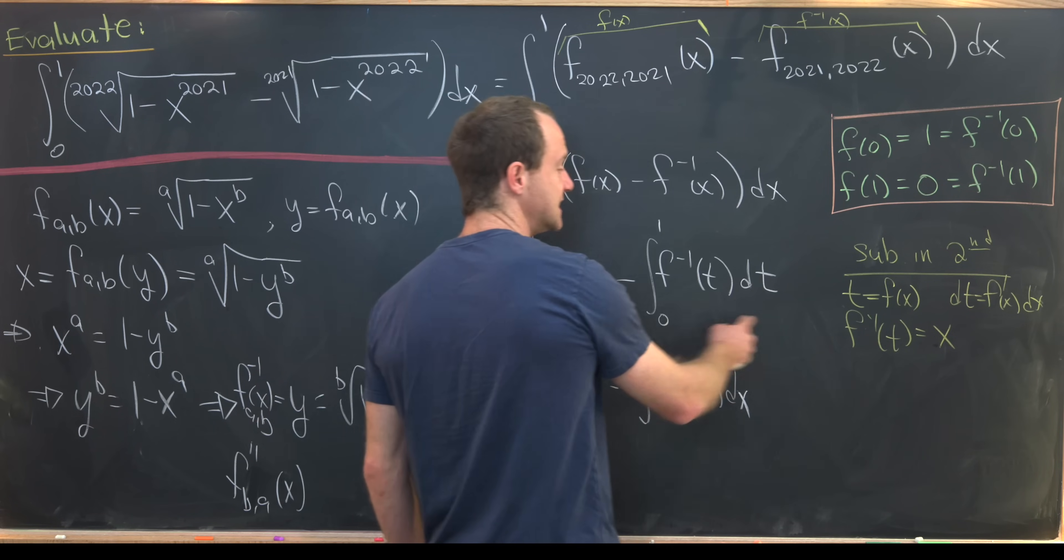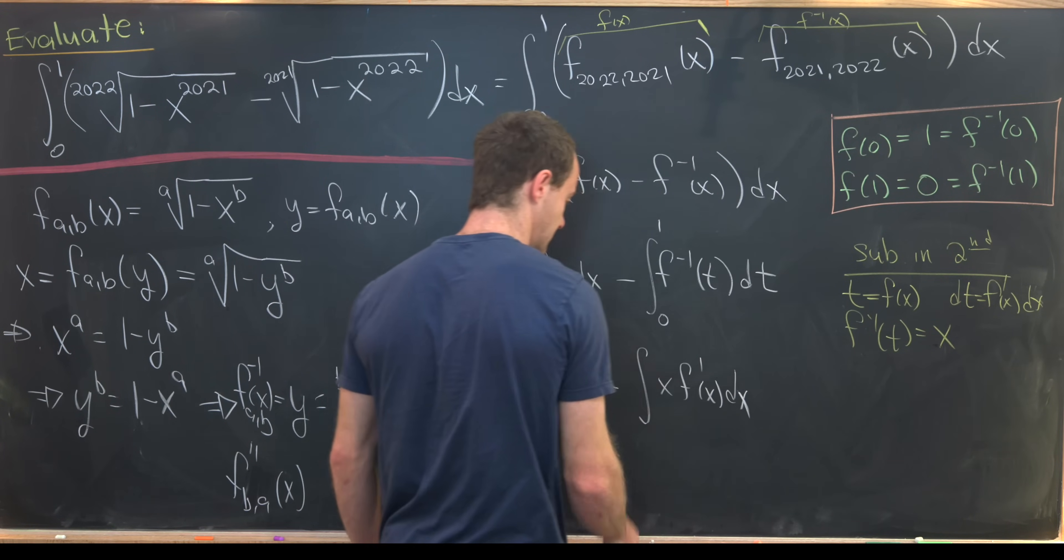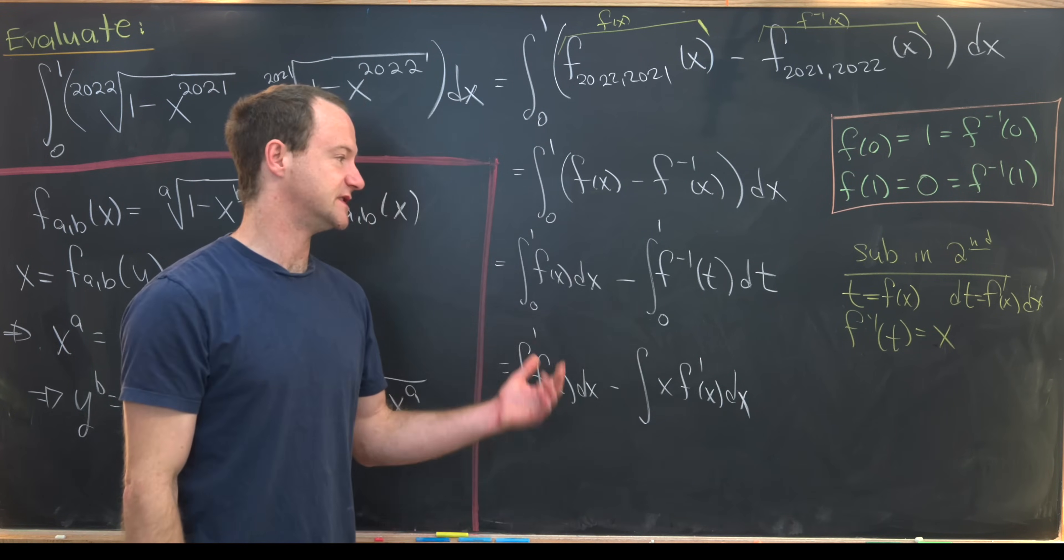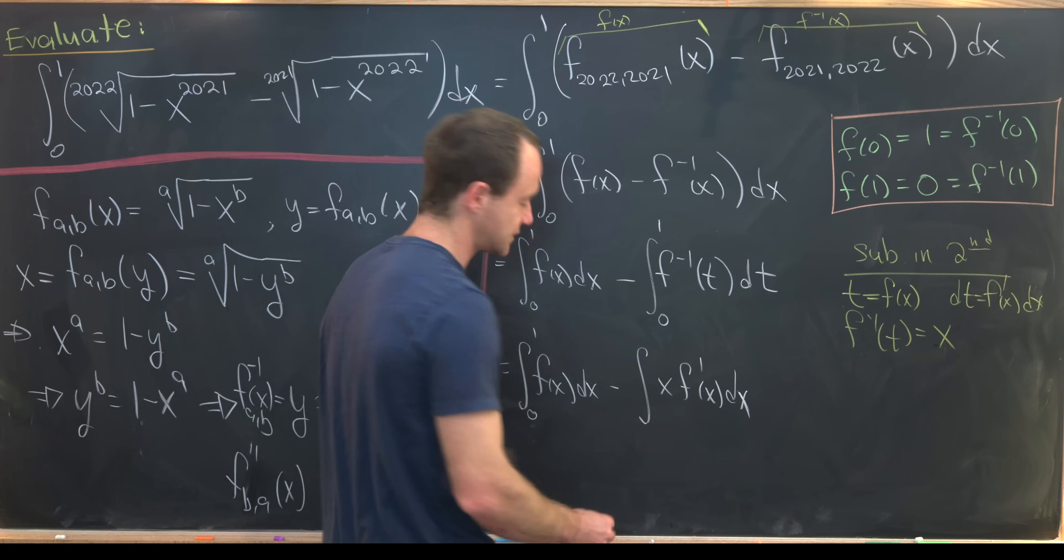And then what about the bounds of integration? Notice when t is equal to 0, x is equal to 1 by this up here. And likewise, when t is equal to 1, x is equal to 0. So I can put a 1 here and a 0 here.